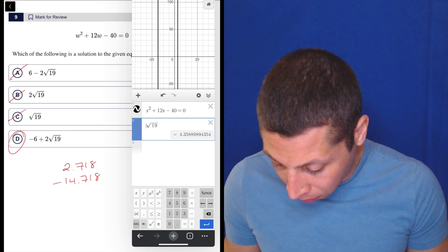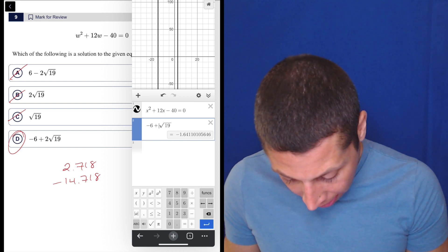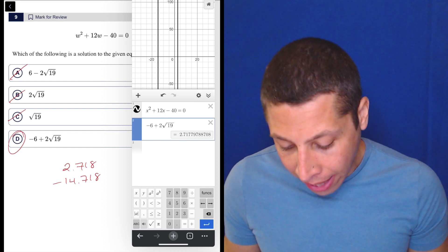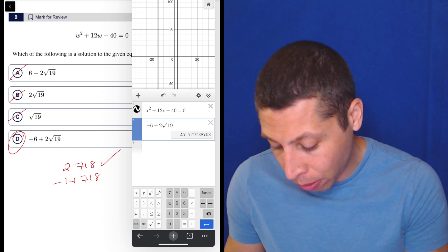So it's probably D, but we can also prove it pretty easily. So that's negative 6 and then plus 2 root 19. And that is 2.718. And it's positive. So it's the right value. So there we go.